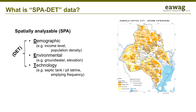So what is SPA-DET data? SPA stands for spatially analyzable. For example, this map of Kampala shows very poor, poor, middle, and high income levels, allowing you to visualize where different socioeconomic groups live within the city. DET stands for demographic, environmental, and technical. Our hypothesis is that DET data can be used as predictors of quantities and qualities of fecal sludge. It is not about causation — for example, income level does not cause different qualities or quantities — but if we consistently observe statistical patterns or relationships, we can use DET data as predictors.